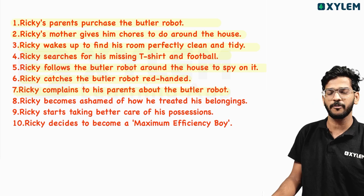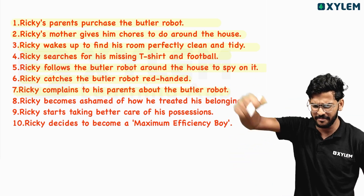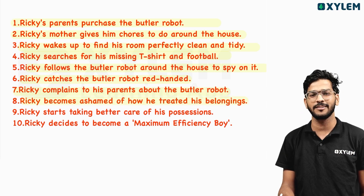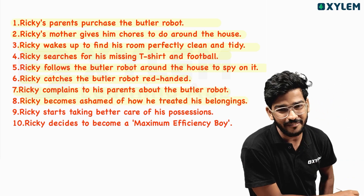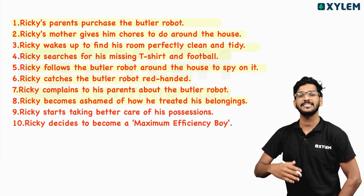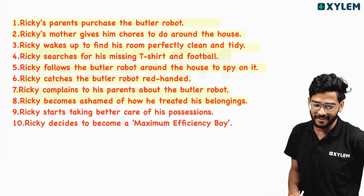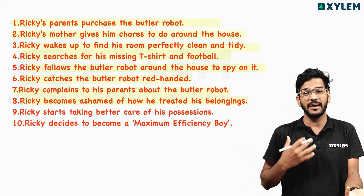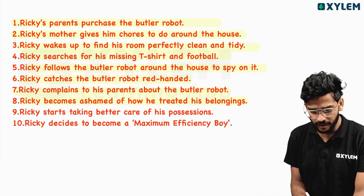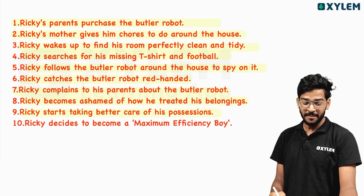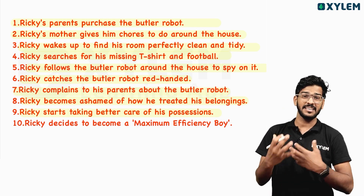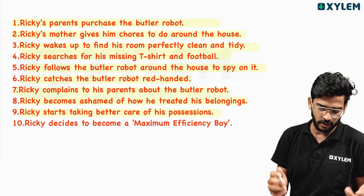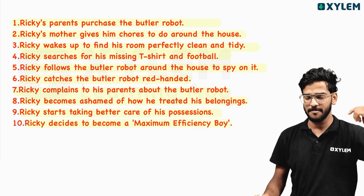Rikki complains to his parents about the butler robot. And Rikki becomes ashamed of how he treated his belongings. He decided to become a maximum efficient boy.